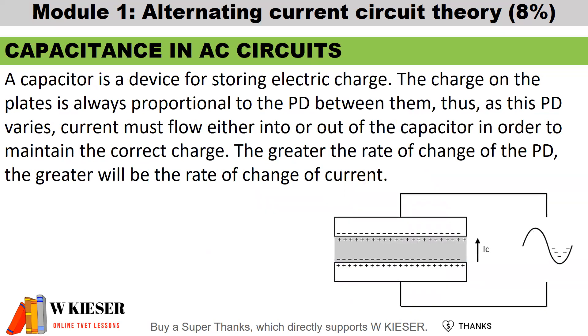A capacitor is a device for storing electric charge. The charge on the plates is always proportional to the potential difference between them. Thus, as this potential difference varies, current must flow either into or out of the capacitor in order to maintain the correct charge. The greater the rate of change of the potential difference, the greater will be the rate of change of current.